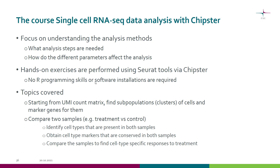You also don't need to install any software because all the tools run on the server side in the cloud. The topics we cover during this course start from the UMI count matrix, finding clusters and marker genes for them. We also look at the case where we compare two samples — treatment and control — identify cell types present in both samples, obtain marker genes that are conserved in both samples, and then find cell type-specific responses to the treatment.